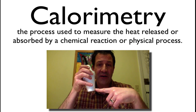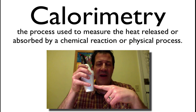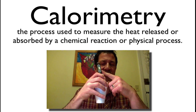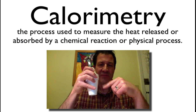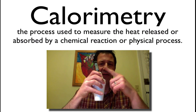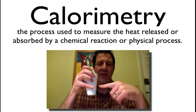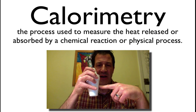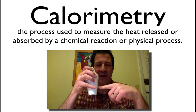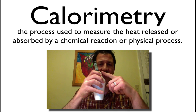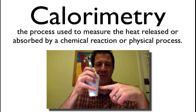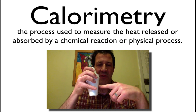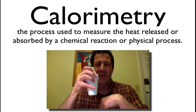So we put water in the calorimeter, then we do the reaction in the water. We measure the change in temperature of the water, and we know if the temperature goes up or down that the reaction must have gained or lost energy. If the temperature goes up, then energy must have come from the reaction into the water — that would be an exothermic reaction. If the temperature of the water goes down, then the reaction must have absorbed energy from the water, and that would be an endothermic reaction.